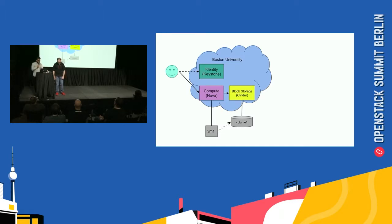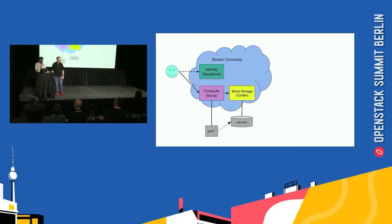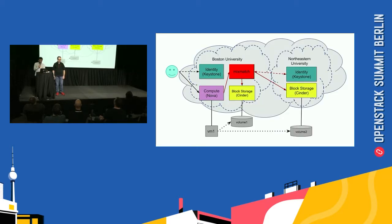The way this works is you have one cloud, which is the BU cloud in this case. You have your normal Keystone, your compute which is Nova, block storage which is Cinder. And you have one VM attached to a volume. And now you want to collaborate and be able to attach a volume from the Northeastern cloud, which is partnering with you for this research project.